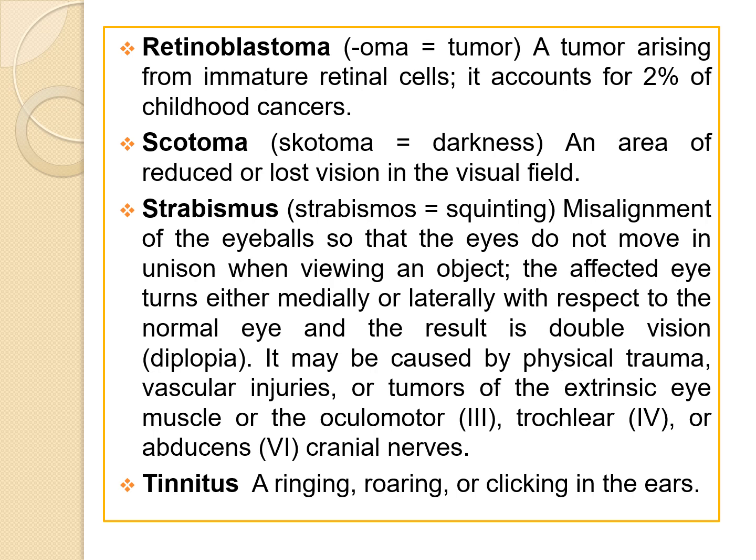The next term is strabismus — misalignment of the eyeballs such that the eyes do not move in unison when viewing an object. The affected eye turns either medially or laterally with respect to the normal eye, and the result is double vision, which is diplopia. It may be caused by physical trauma, vascular injuries, or tumors of the extrinsic eye muscles or the oculomotor, trochlear, or abducens cranial nerves.